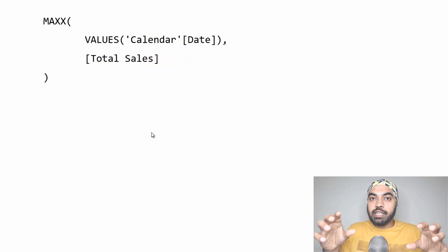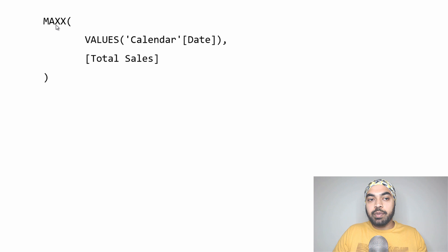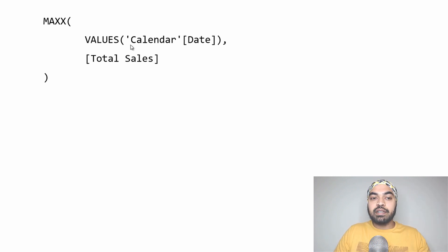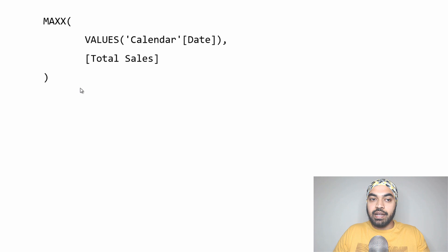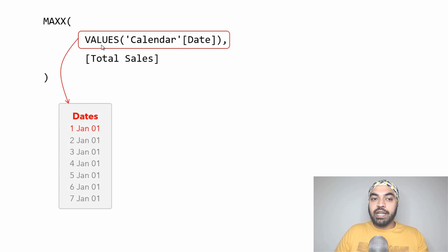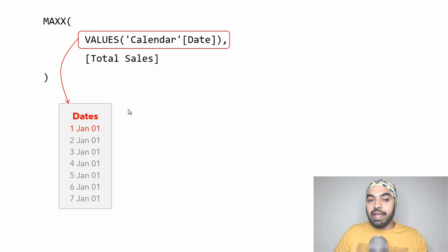I've created a quick slide to explain visually how context transition starts to happen. Take a look at this function: we wrote MAXX, telling it to go in every single row of the table we created which has unique dates — one row per date. Then against every single date, calculate total sales, find the max, and deliver it as an answer. The VALUES function creates a table with just one column of unique dates. Against each date — first Jan, second Jan, and so on — we find the sales, and then find which one is the maximum.